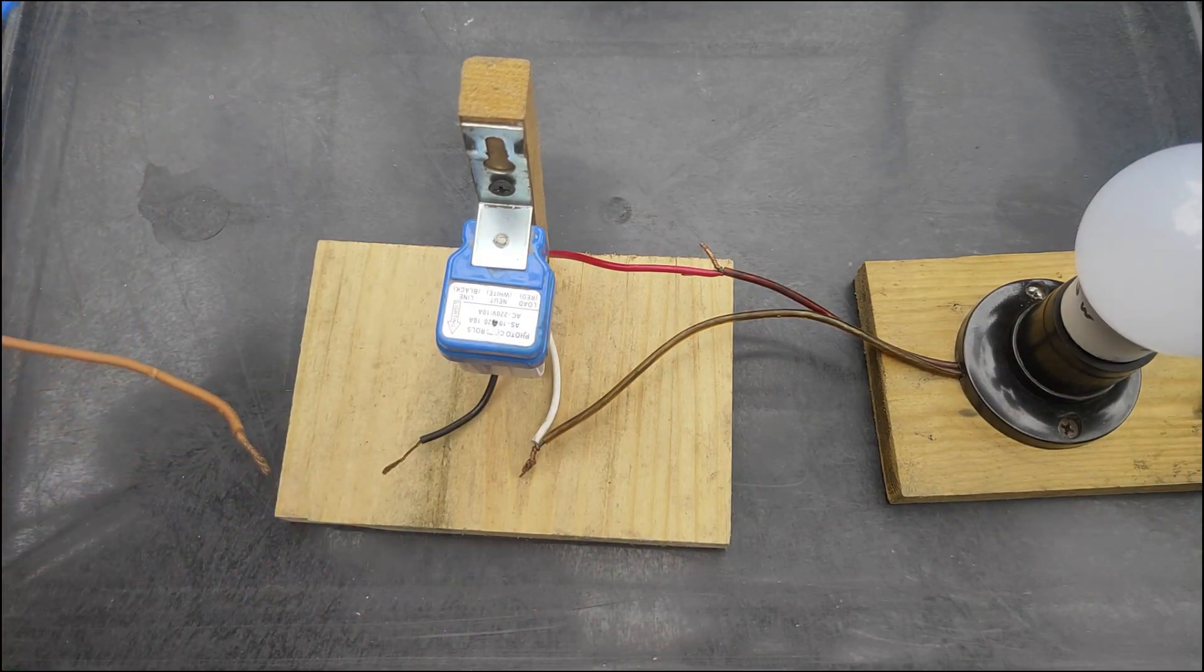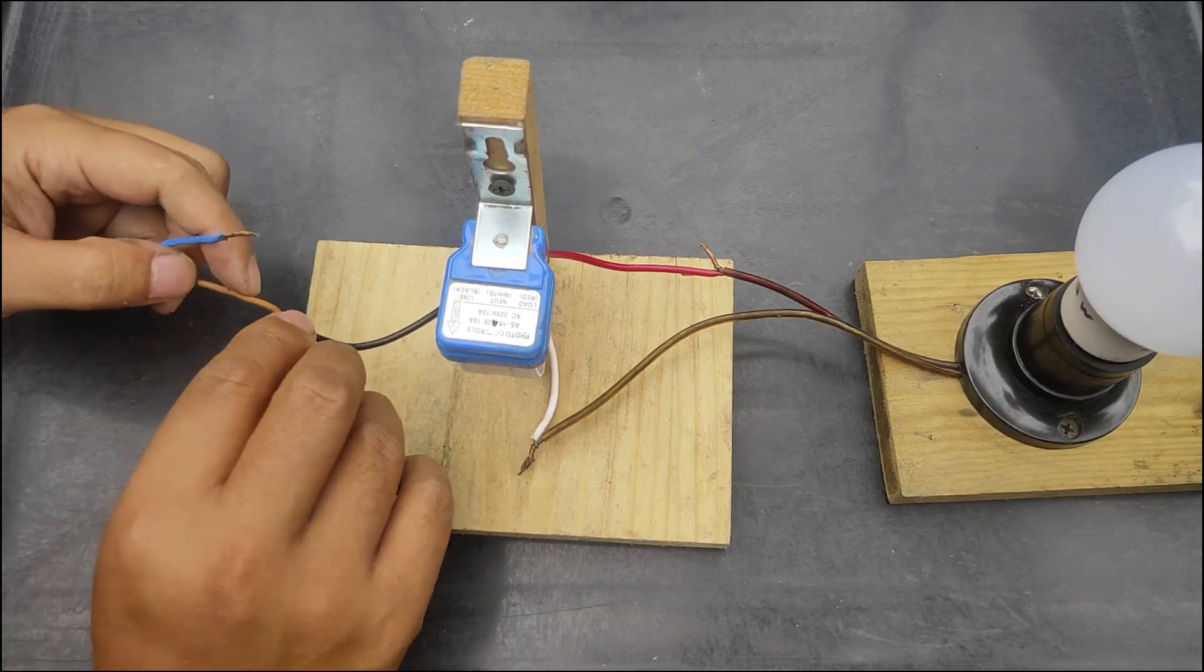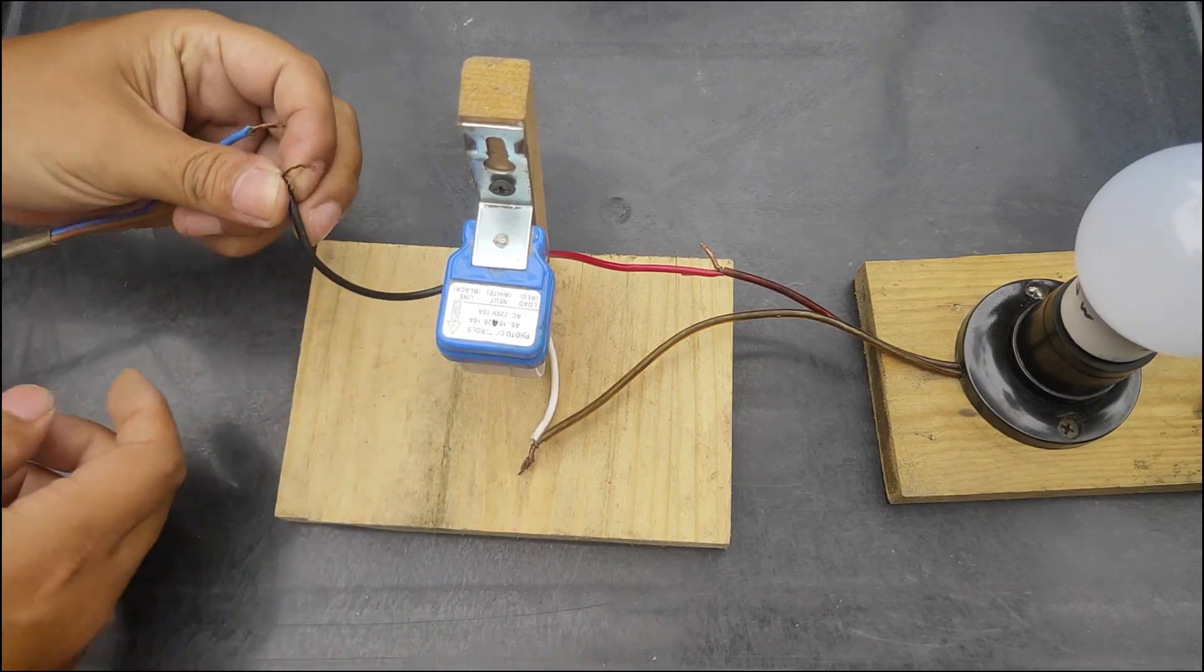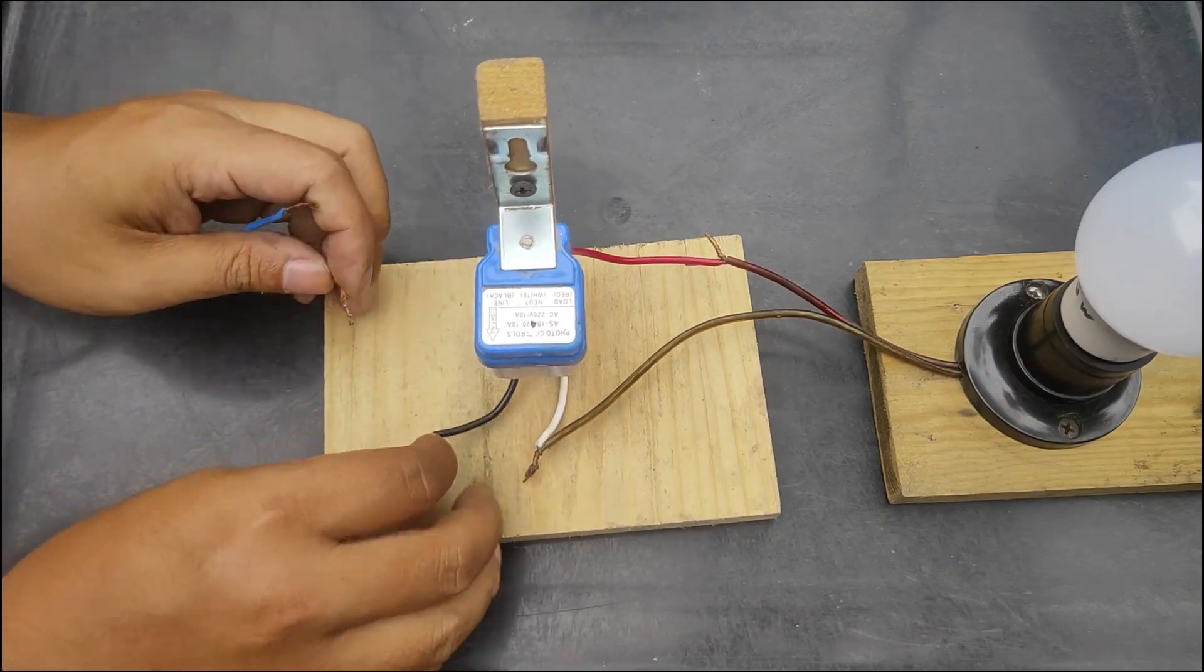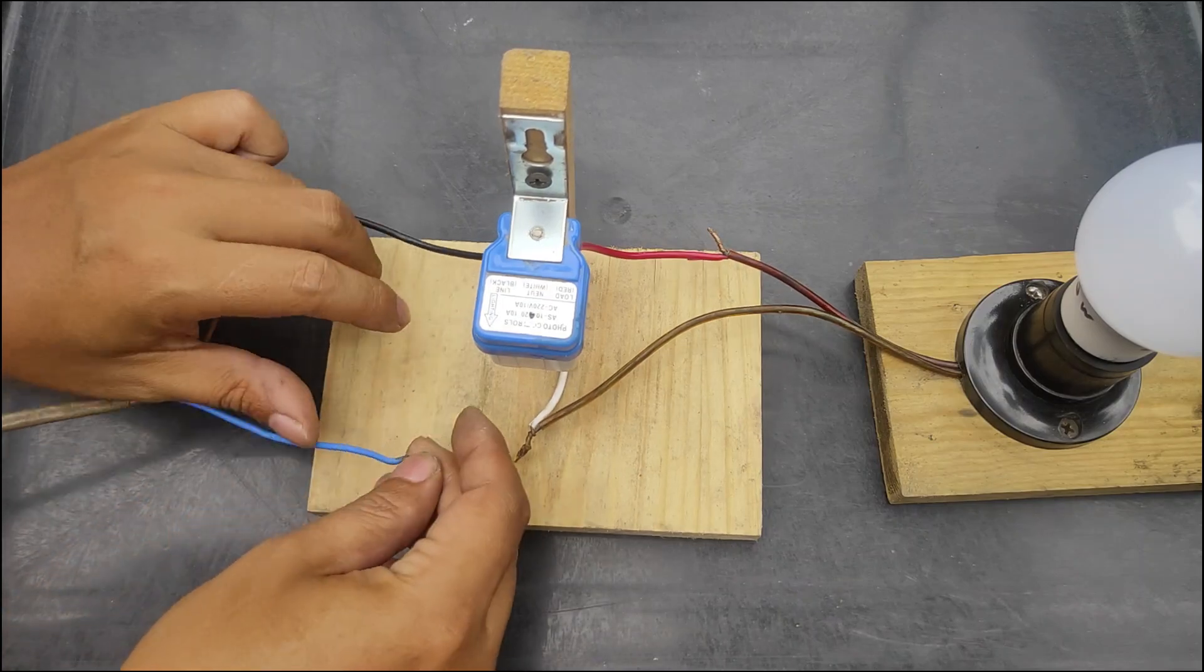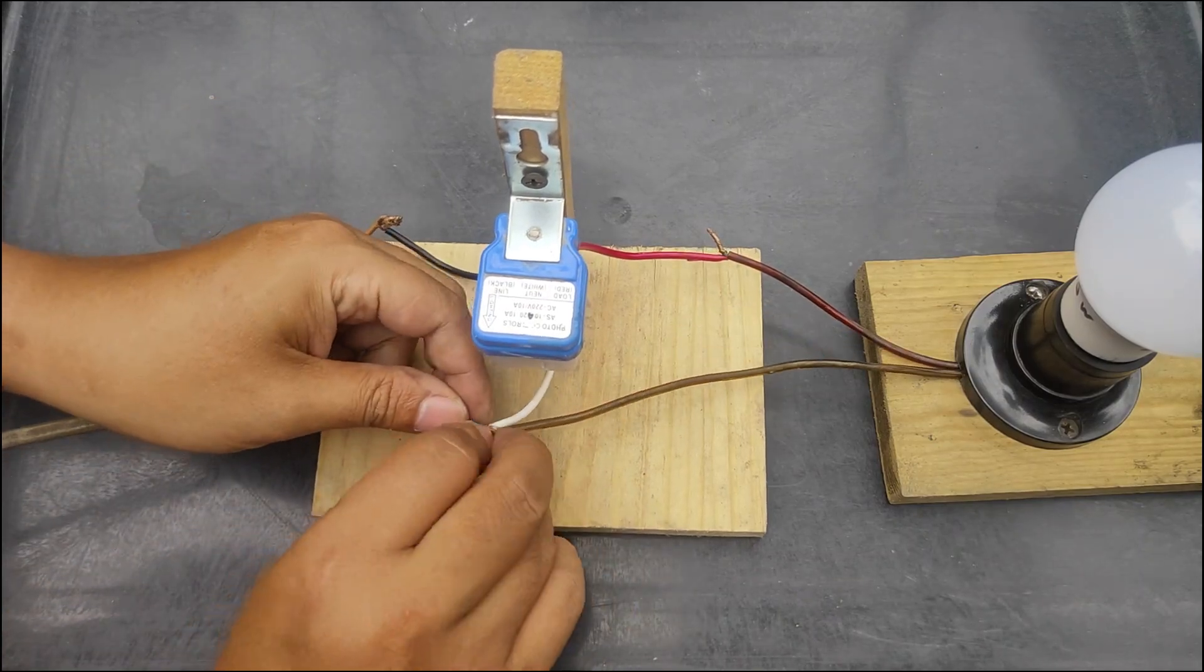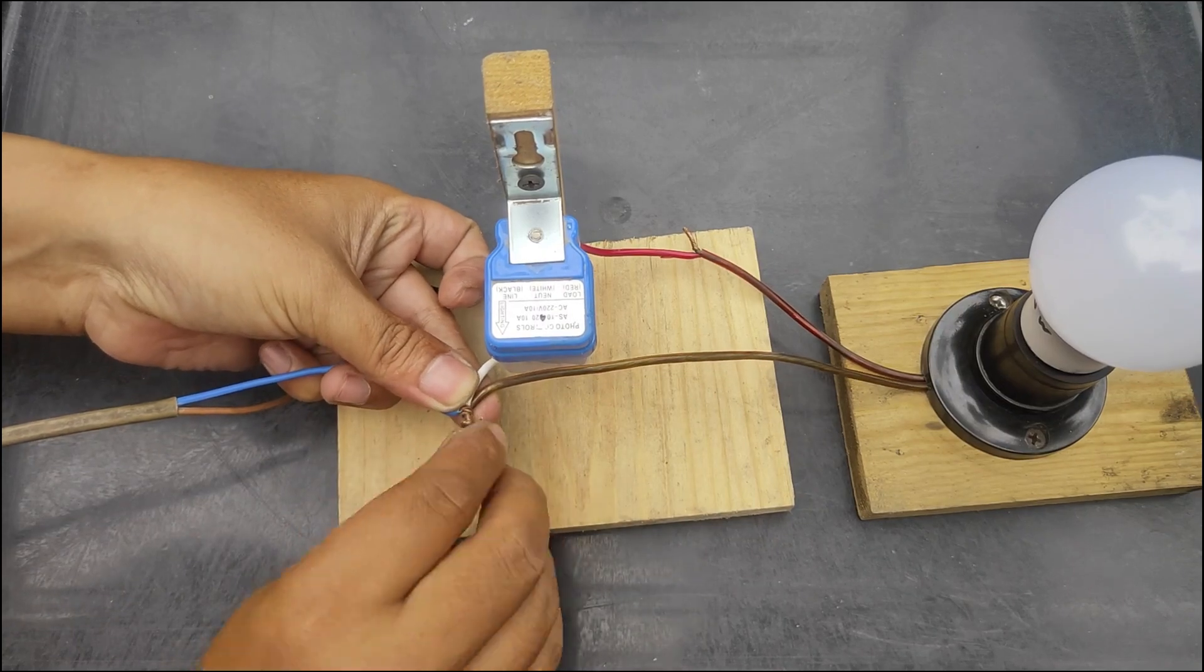Now, let's connect the sensor to power. Take the black wire from the sensor and connect it to one of the wires from the power source. This is the line wire. For AC current, don't worry about which one is line or neutral. Just pick one. Finally, connect the white wire from the sensor to the remaining power source wire. This provides the necessary neutral connection.